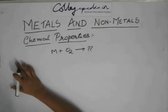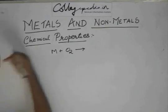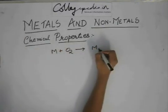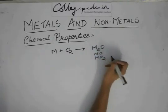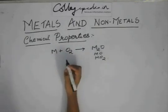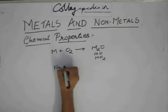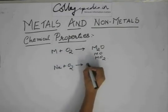It will generally or most commonly form an oxide, which can be M2O, MO, or MO2, depending on the valency of M. When sodium reacts with O2, it forms Na2O.